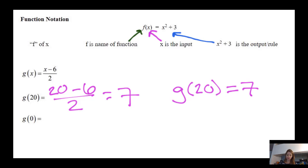Do another example. G of zero means when X is zero. Evaluate the function. Zero minus six is negative six. Negative six divided by two is negative three. So G of zero equals negative three.